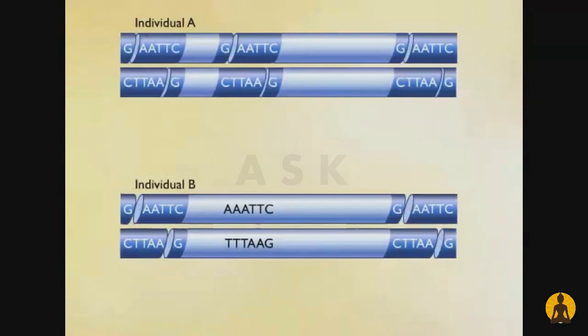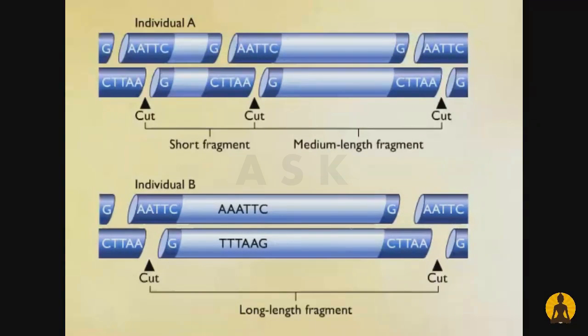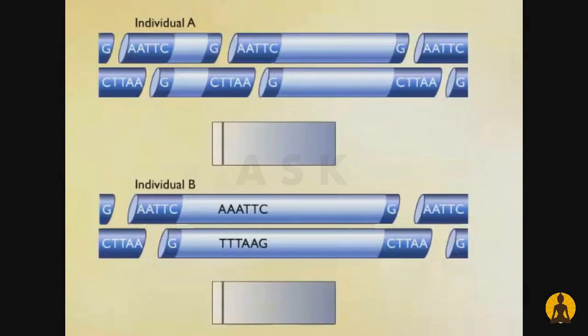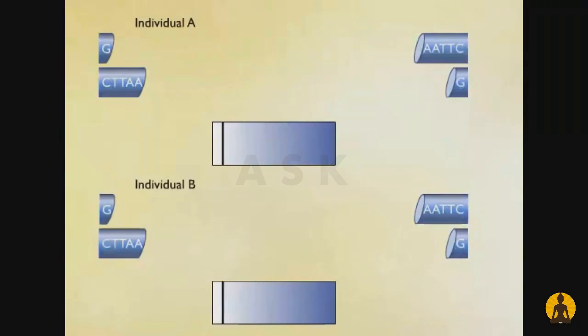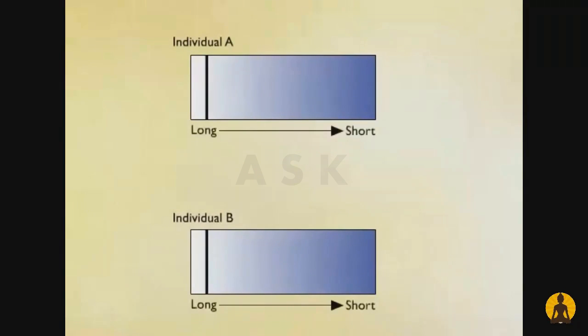By cutting a DNA sample with a particular restriction enzyme, DNA fragments of different lengths are obtained. These fragments are separated by gel electrophoresis. This provides a pattern of bands that is unique for the particular DNA being analyzed.